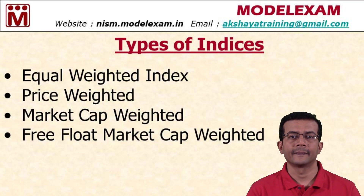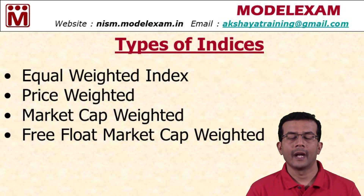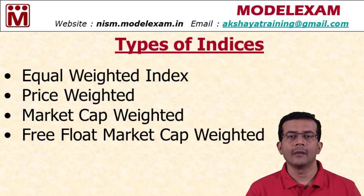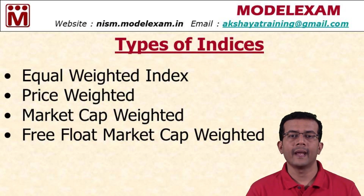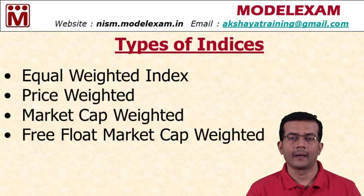That is about the price weighted index. The third one is the market cap weighted index. Market capital is nothing but the total number of shares multiplied by the current market price. This market capital denotes the size of the company. When weightage is given based on market capital, naturally the bigger company — like Reliance Industries or TCS — will get higher weightage, while relatively smaller companies like Tata Motors or ICICI Bank will get a smaller weightage.